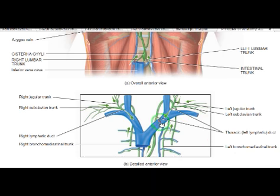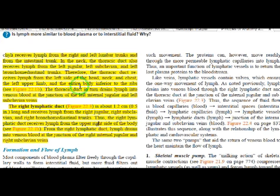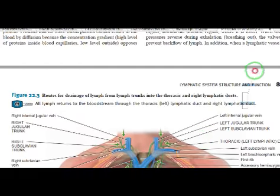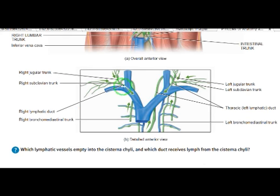The thoracic duct is shown in green color — all the vessels have been shown in green. The thoracic region covers major areas. Similarly, the right jugular and subclavian main junction drains here, and this is the right lymphatic duct draining into the right subclavian and jugular junction.